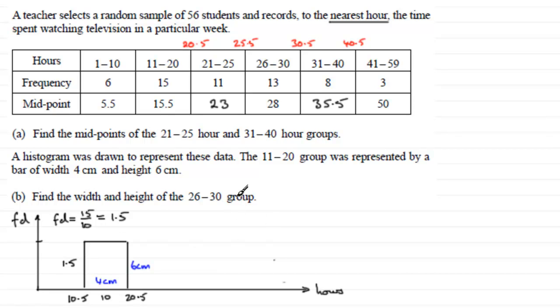Now, when it comes then to working out, finding the width and height of the 26 to 30 group. Well, the 26 to 30 group is going to have a width of 5 units. Because when it comes to plotting that, let's just draw that bar in. And again, it's not drawn to scale. So it's just trying to illustrate a point though.